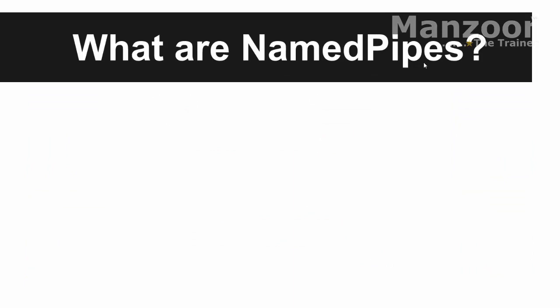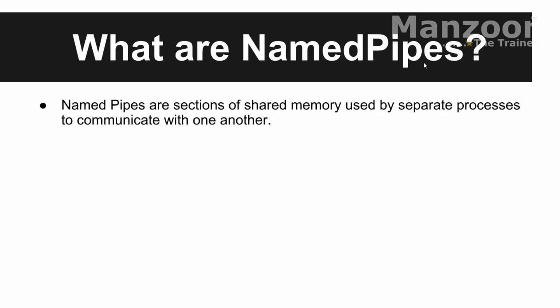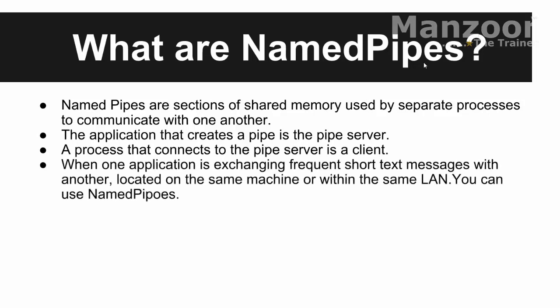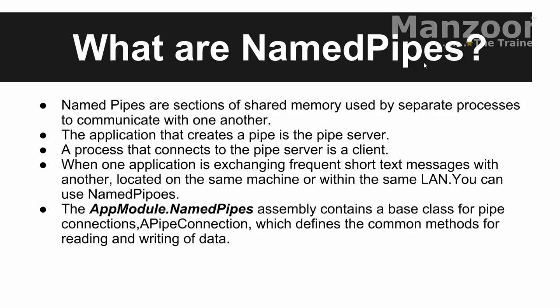Now, what are named pipes? Named pipes are the same text message communication, but this is two-way communication. Named pipes are sections of shared memory used by separate processes to communicate with one another. The application that creates a pipe is the pipe server, and the process that connects to it is the client. One application is exchanging frequent short messages with another located on the same machine or within the same network — you can use named pipes. The System.IO.Pipes assembly contains the base classes for pipe connection.